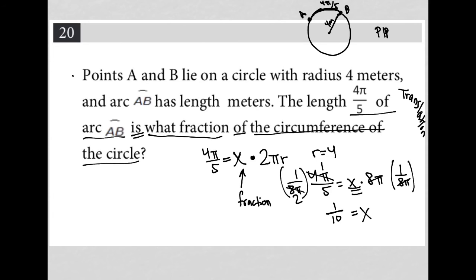So our fraction, which is what we expected - we expected to get a fraction for X. Our fraction is 1 tenth. So in essence, the length of the arc is 1 tenth the length of the entire circumference. So that is our answer.